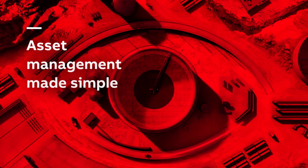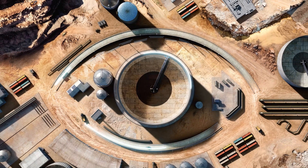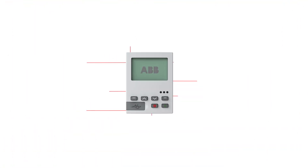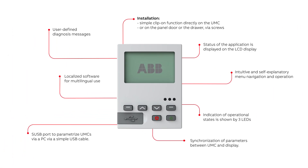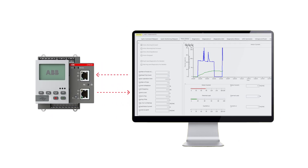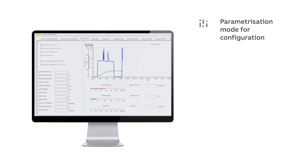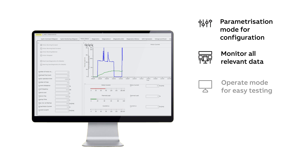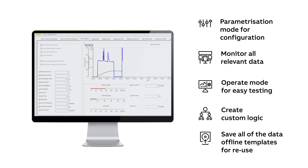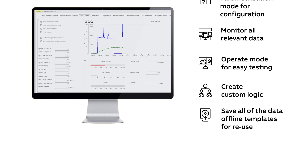Simplify asset management with the UMC's user-friendly configurations, offering unique local control with numerous functions, software configuration by the PLC, LCD display, and the Field Information Manager. The FIM UMC software handles parameterization, monitors measurement and diagnostic data, provides an easy testing mode, allows for custom logic creation, and enables offline data template storage for reuse.